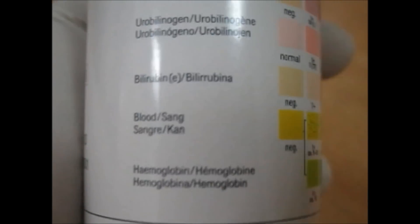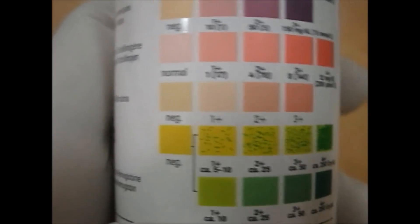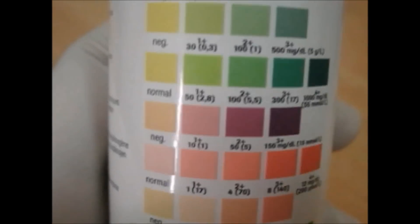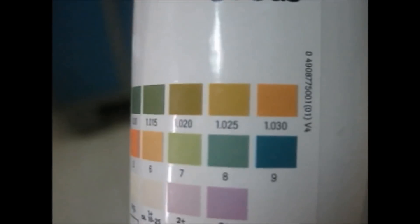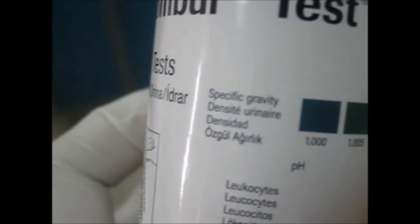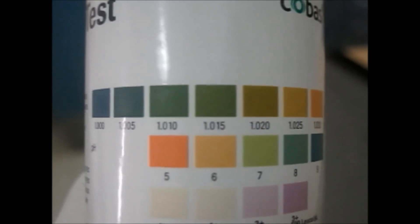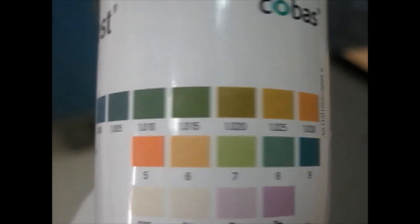Below is the bilirubin, and at the last is the blood or hemoglobin in your urine. You can clearly see the values are given there, and its color changes depending upon the level of that particular thing in your urine.